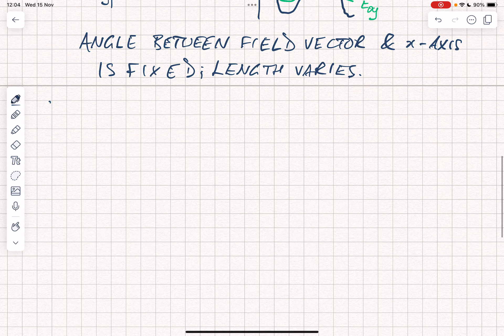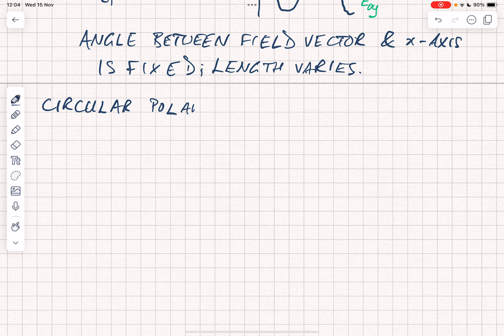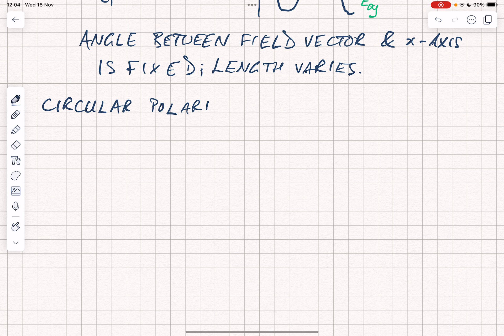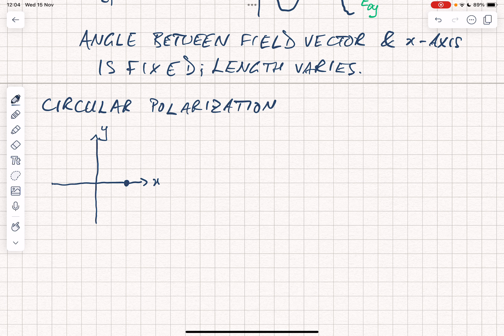Now let's consider circular polarization. What we're going to see is that for circular polarization it's the opposite: the length is fixed but the angle varies with time. For circular polarization, what would we see? We've got y, we've got x, and at t equals 0 we would be sitting here on the x-axis. This is going to be e0x, this is going to be e0y, which is the same as e0x because this is circular polarization.